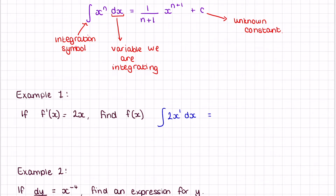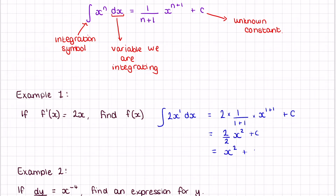For the integral, we're still going to have the 2. Then we multiply by 1 over (n+1), so 1 over (1+1), multiplied by x to the power of (1+1). Then we add plus c. Simplifying, we get 2 over 2 times x to the power of 2, plus c, which equals x squared plus c.